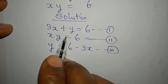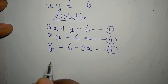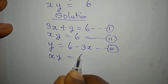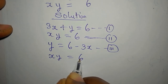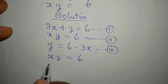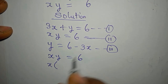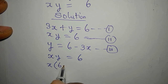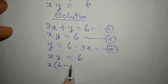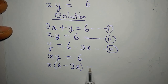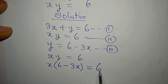What we'll do now is put equation 3 into equation 2. Our equation 2 is xy equals 6, so I'll write x, then in place of y I write 6 minus 3x, and this is equal to 6.